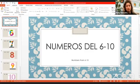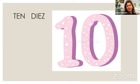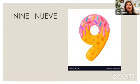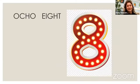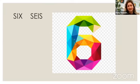Let's go backwards. Number ten: diez — your turn, diez. Nine: nueve. Eight: ocho. Seven: siete — good job. And six: seis. You can re-watch the song and that way you are going to have better pronunciation with these numbers.